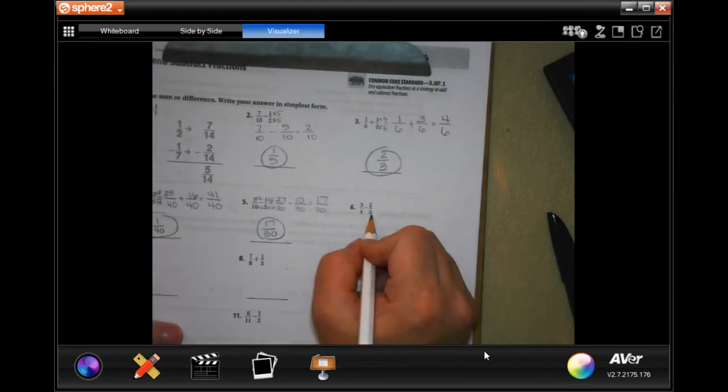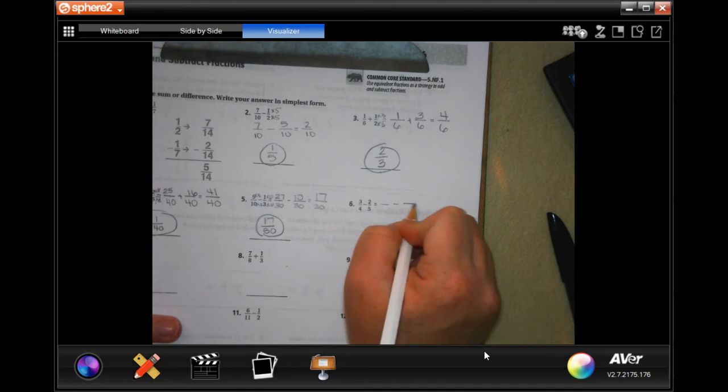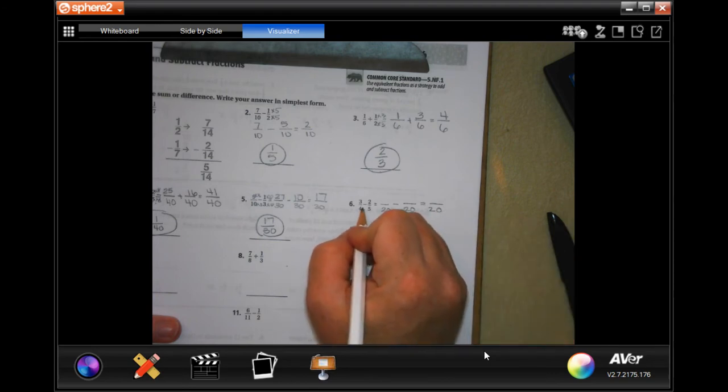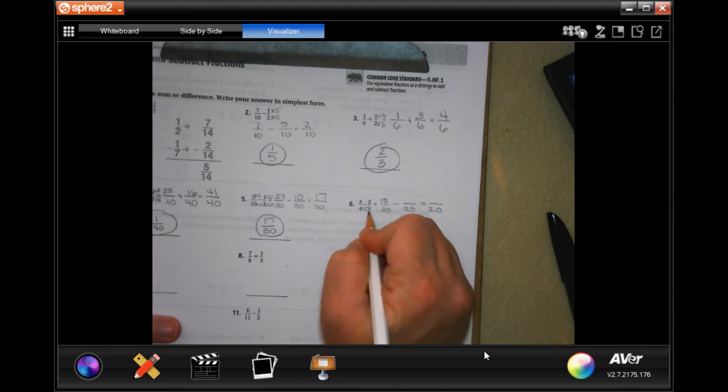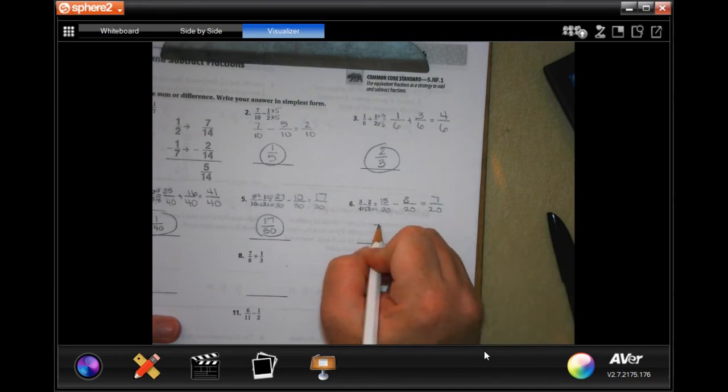Four and five - smallest one is going to be twenty. I had to multiply four by five to get to twenty, so when I multiply the top by five I get fifteen. I had to multiply five by four to get to twenty, so when I multiply the top by four I get eight. Fifteen minus eight is seven. Seven is a prime number so I can't reduce that at all.